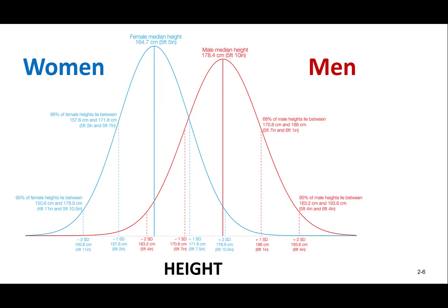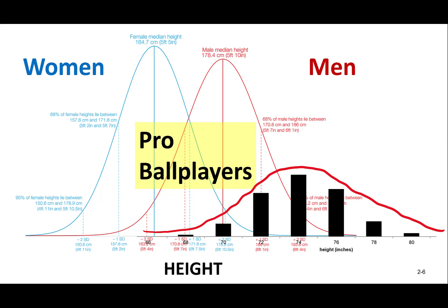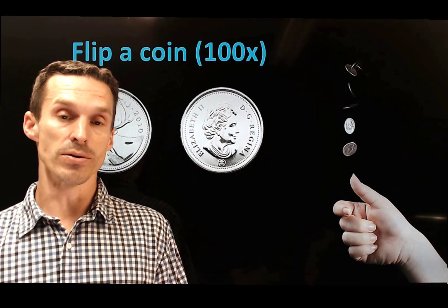Normal distributions work in a variety of different examples. Here we see the distribution of men and women according to their height, and the average for males is a little bit higher than it is for females. Of course, if we pull out a different distribution — for example, looking at all the pro baseball players in the world — you can see that they're actually a little bit higher than the average male height.